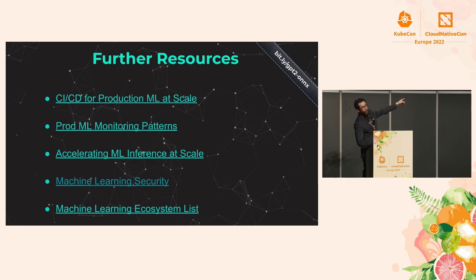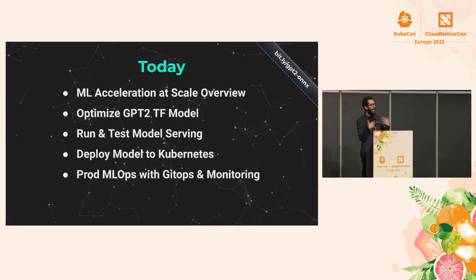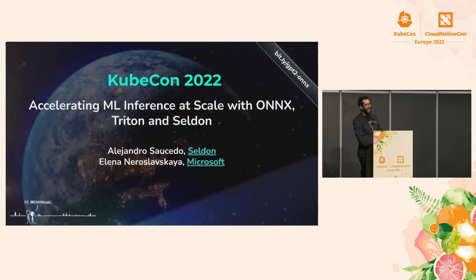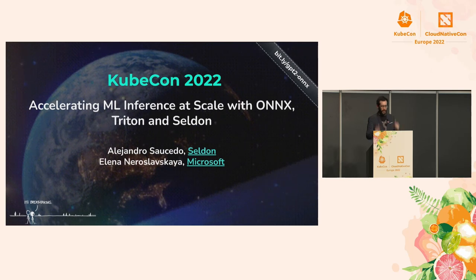The slides are available at the bit.ly link shown here, where you can access the slides, resources, and notebooks. To summarize, today we covered machine learning acceleration at scale — how to optimize your models, how to run them locally, how to deploy them to Kubernetes, and how to introduce production cloud native tooling. Thank you so much, I hope you enjoyed it, and I'll take questions.